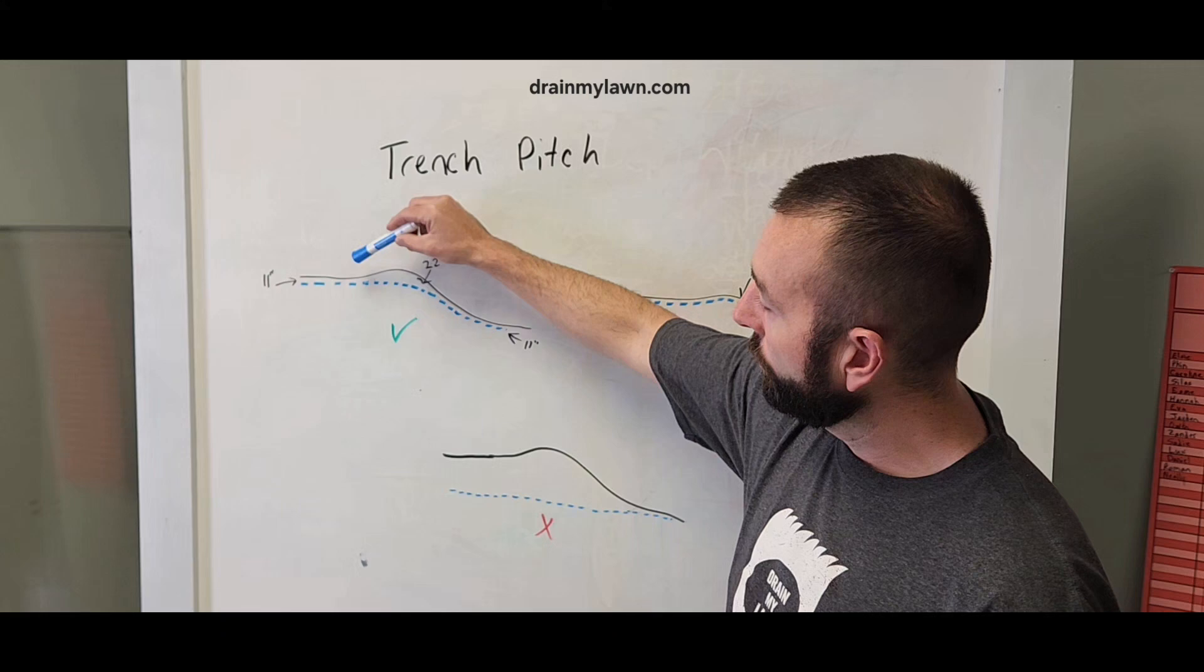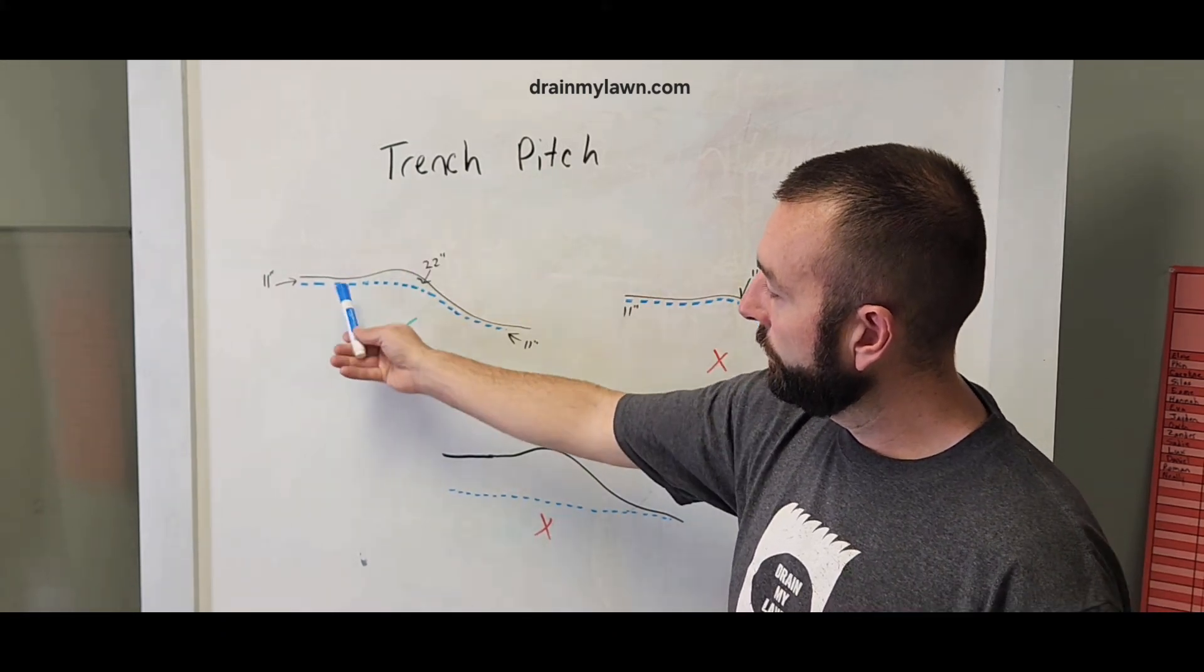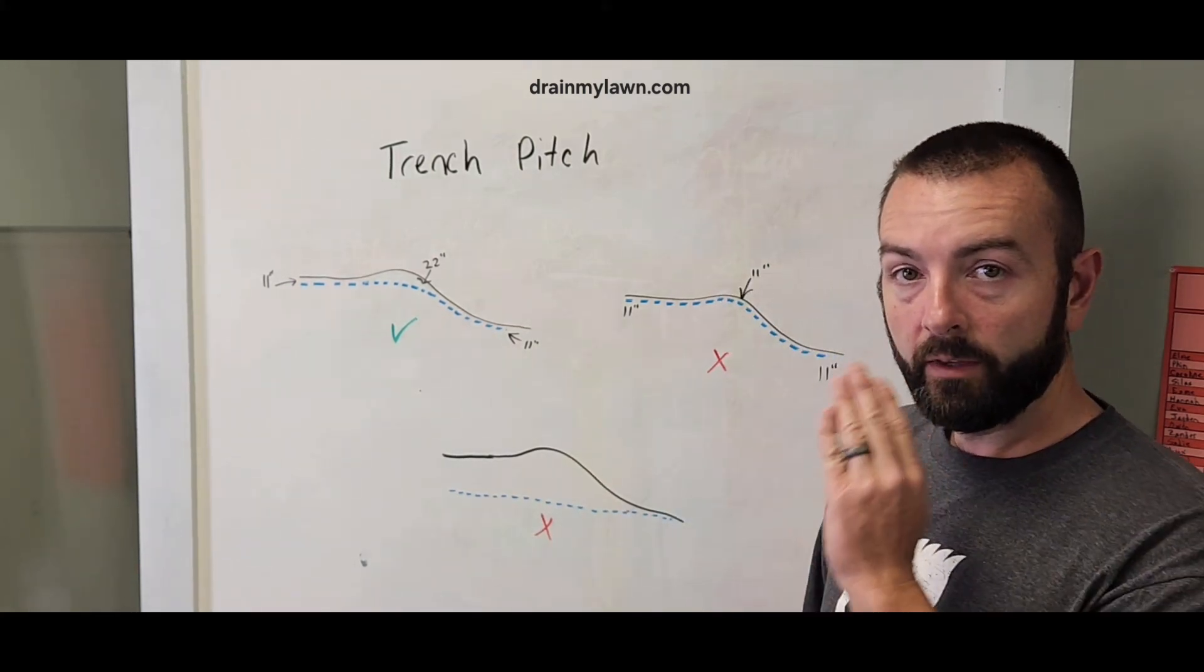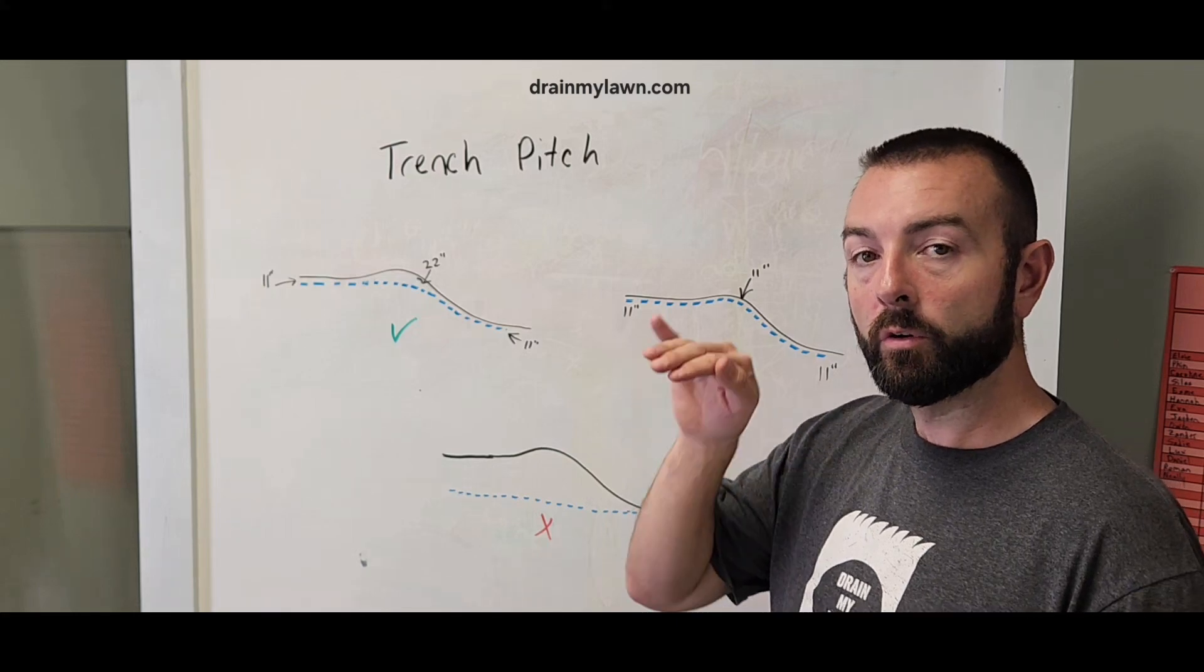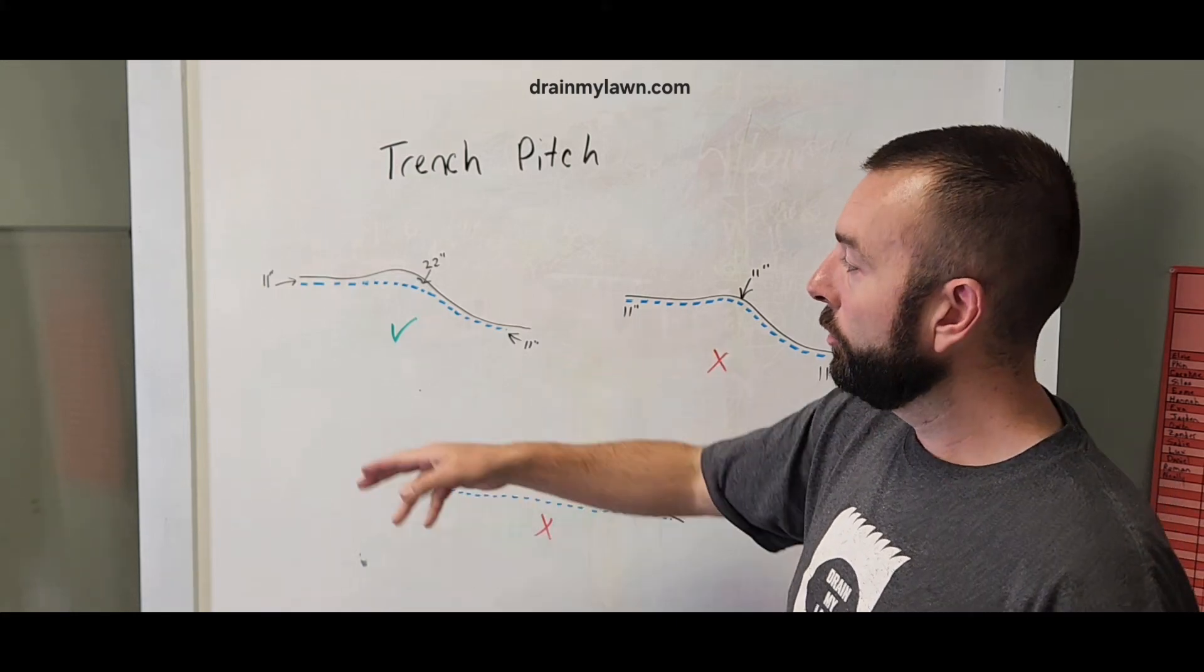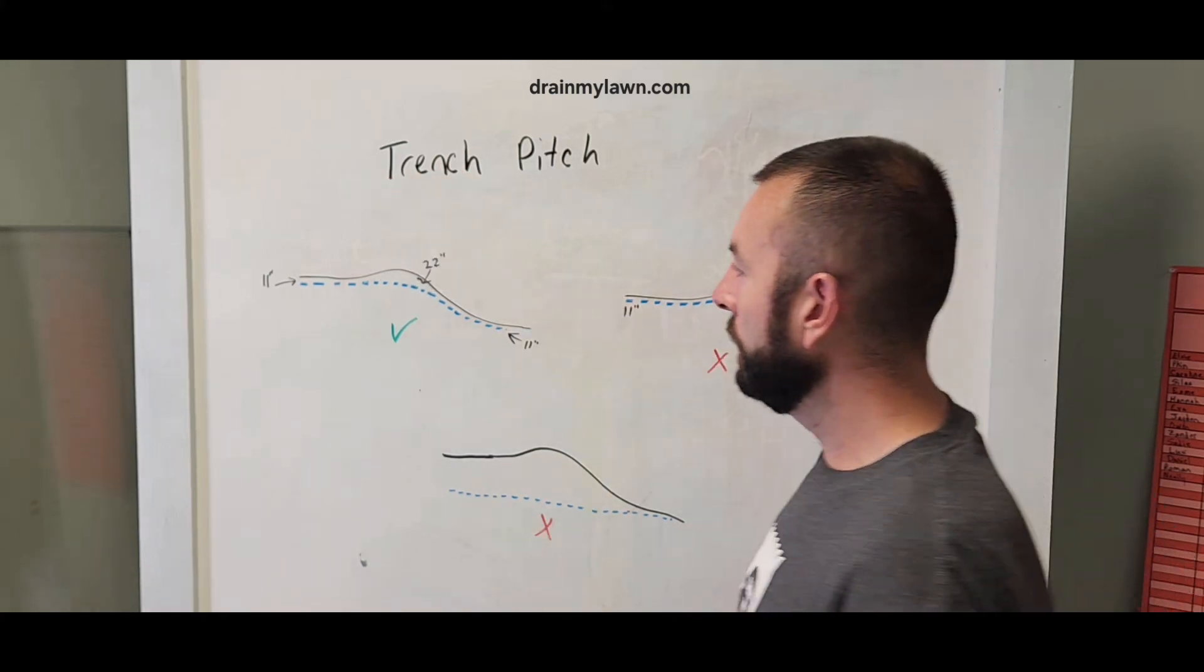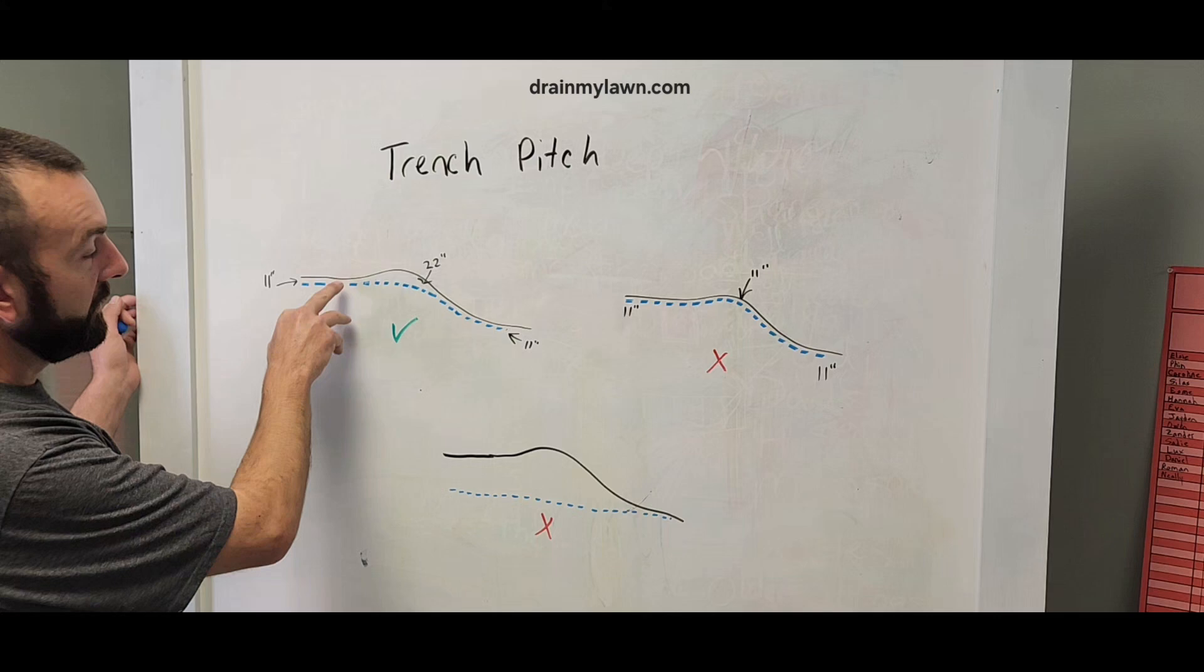We only go deeper right where it comes uphill. Once we start our depth here, which is our normal depth, we have to keep going. We have to make sure that our trench is either going flat or downhill, no matter what the height of the ground is above it.